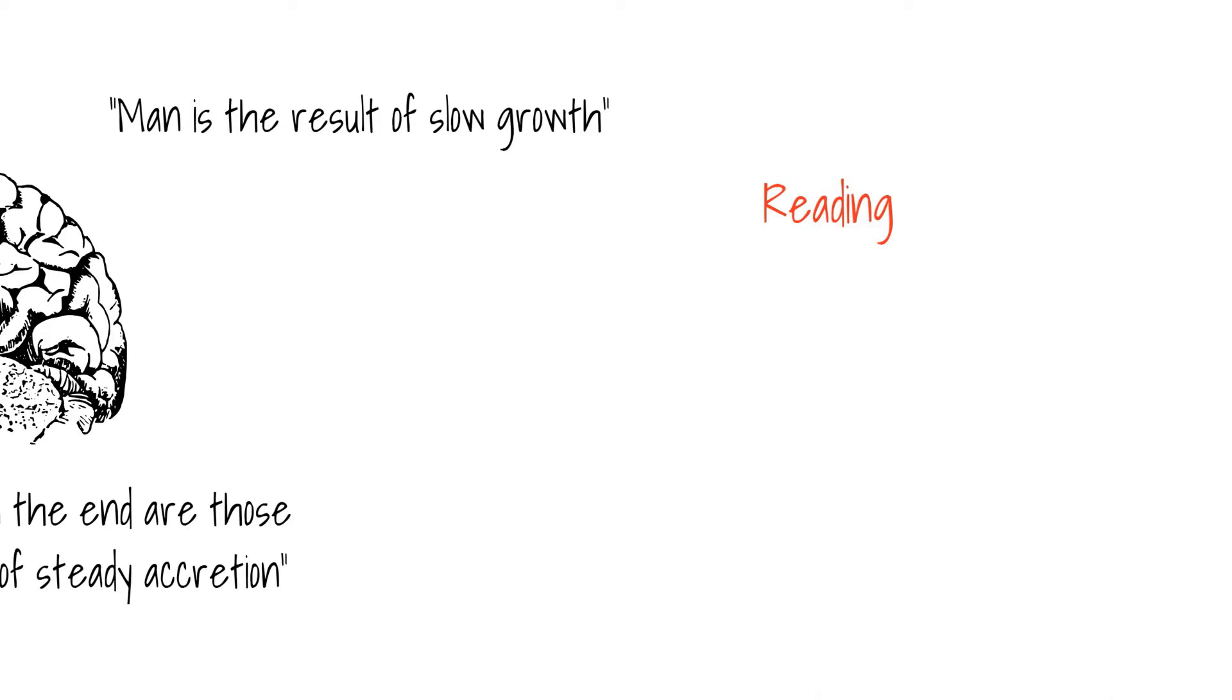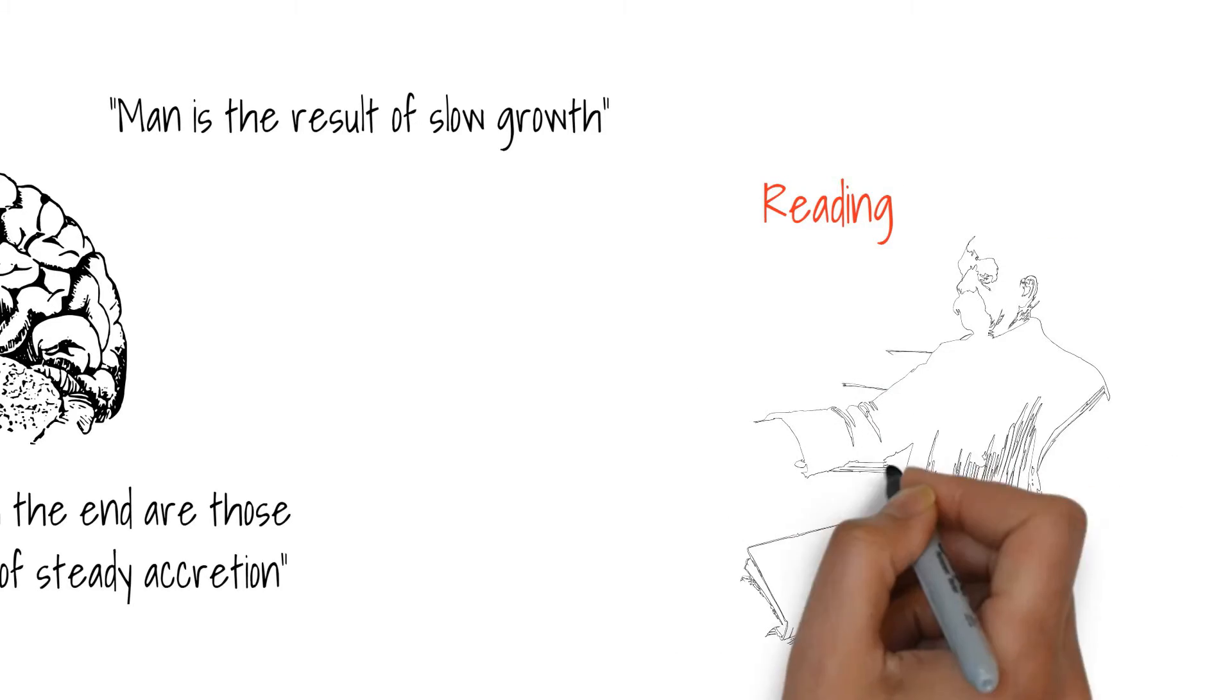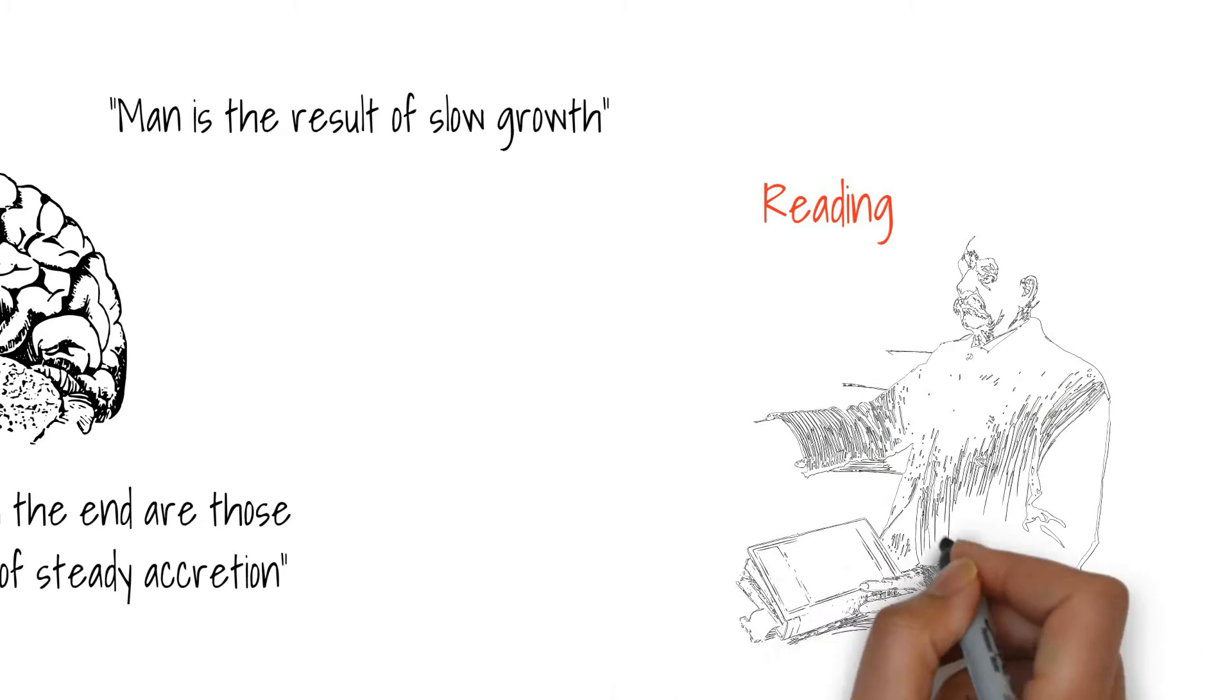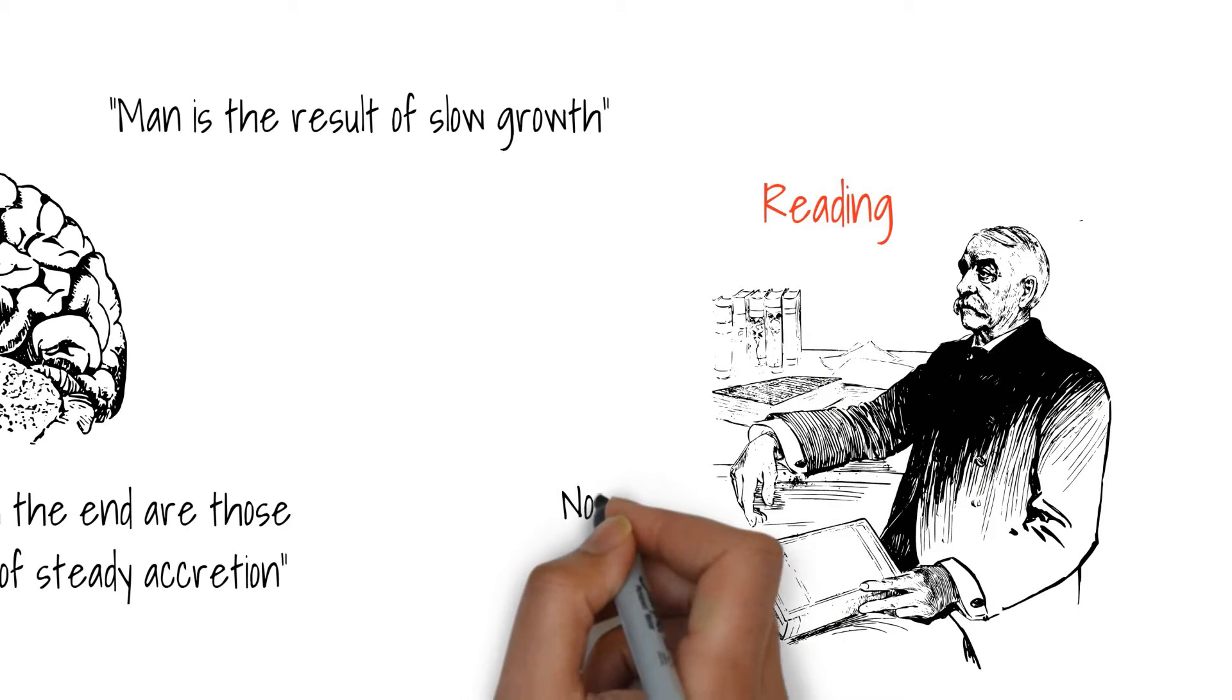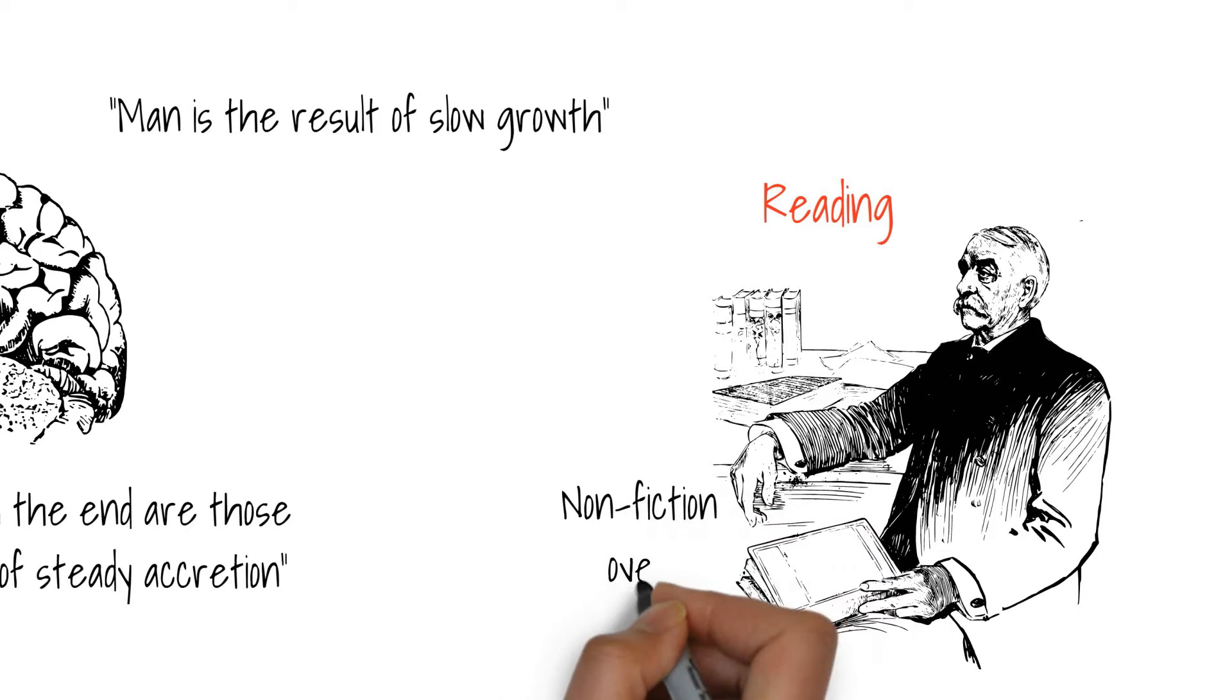Alexander Graham Bell thought that reading was a key to success, but only if what you read is helpful. He advocated reading books which provided a practical insight into real life, rather than constantly reading novels. This way you will be prepared for reality.